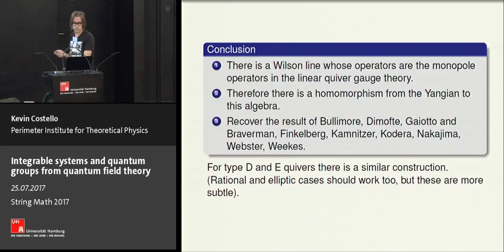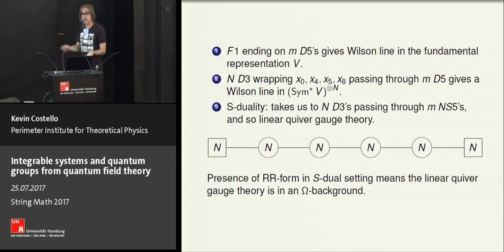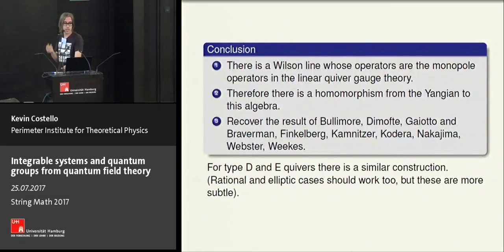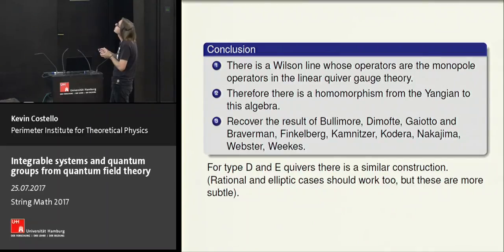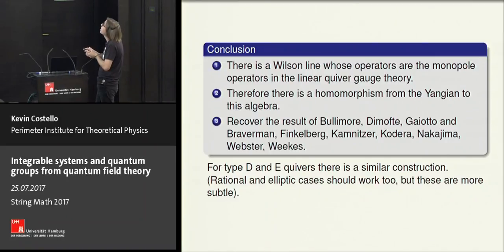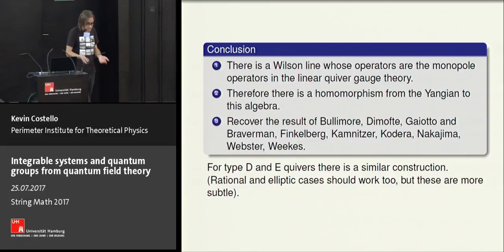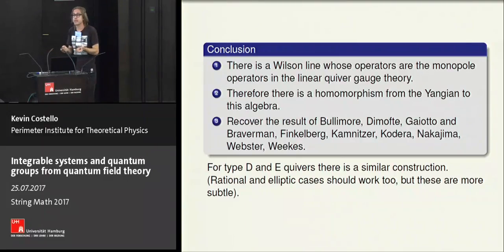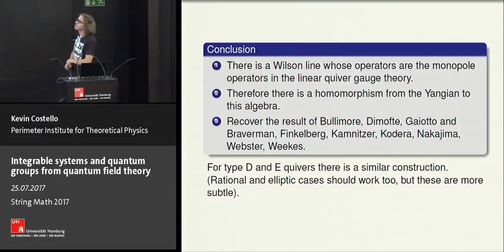The conclusion is that there is a Wilson line in our 4D gauge theory where the local operators on the Wilson line are the monopole operators in the linear quiver gauge theory. By our general discussion with the RTT algebra, we conclude that there is a homomorphism from the Yangian to this algebra — and this is what Bullamore, Dimofte, Gaiotto, Braverman, Finkelberg, Kamnitzer, Nakajima, Webster, and Weeks proved.